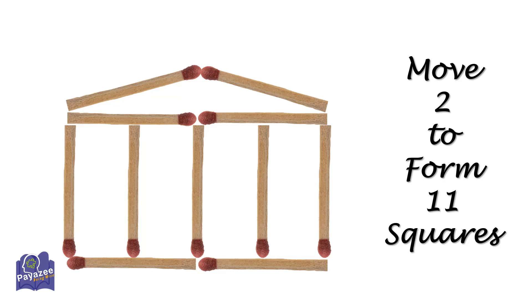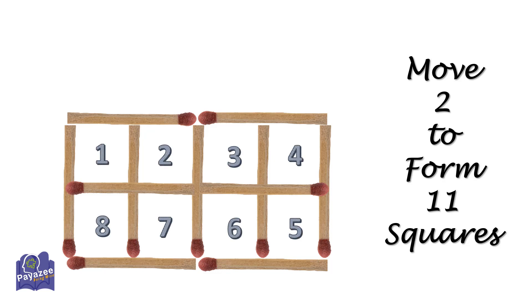We will move the top 2 matches to the middle. This will form 8 squares. We have 1, 2, 3, 4, 5, 6, 7, 8.